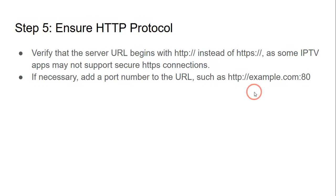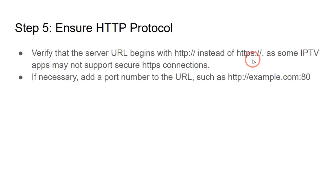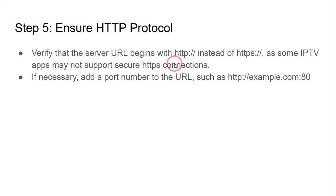If this still does not work, move on to step number five: ensure the correct HTTP protocol. Verify that the server URL begins with HTTP instead of HTTPS, because some IPTV apps do not support secure HTTPS connections. Remove the 'S' from the URL if necessary, and if needed, add a port number to the URL such as HTTP://example.com:80.